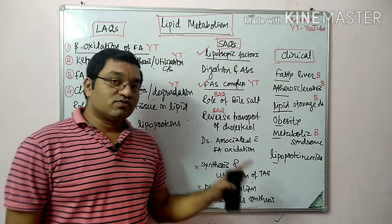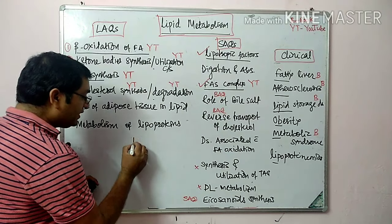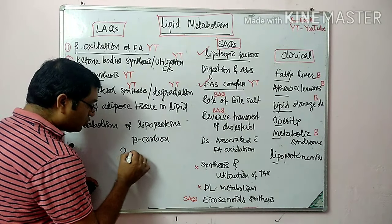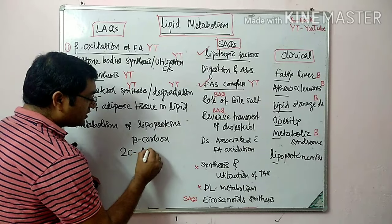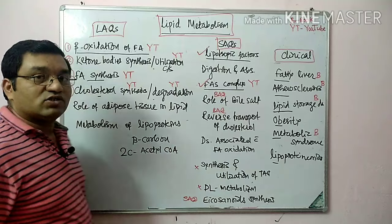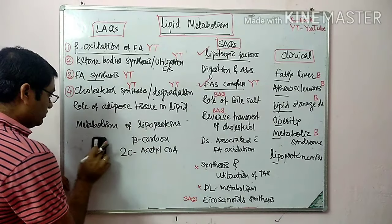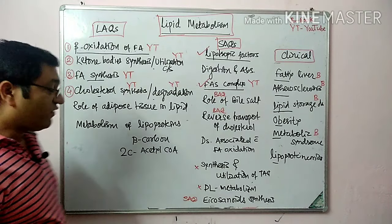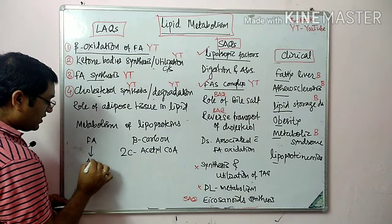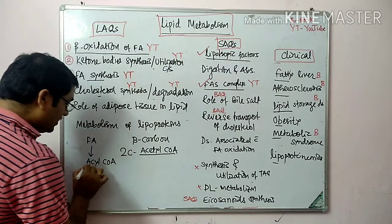In beta oxidation of fatty acid, there is oxidation at the beta carbon and sequential removal of two carbon fragments in the form of acetyl coenzyme A. The first step is activation of fatty acid into acyl coenzyme A, where fatty acid is converted into acyl coenzyme A.